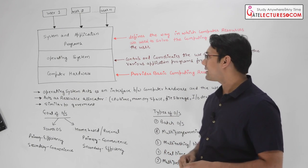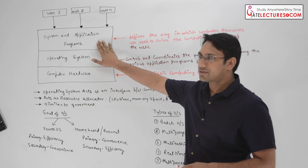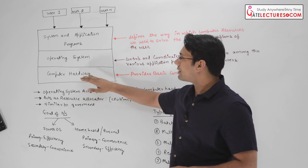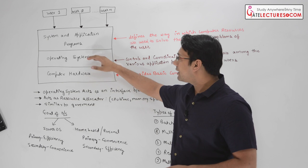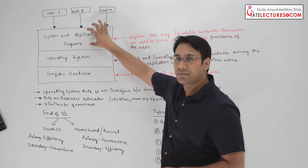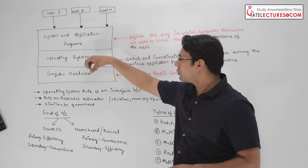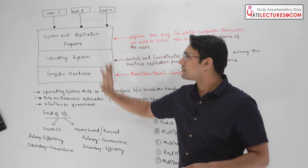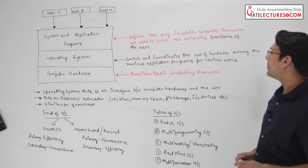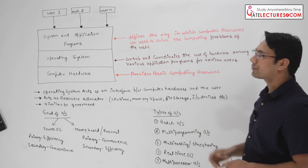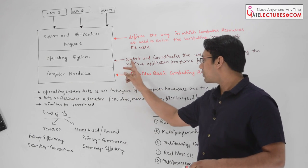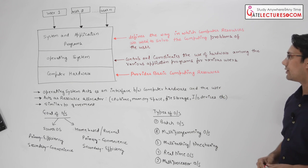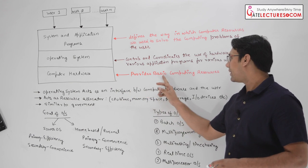An operating system acts as an interface between the computer hardware and the software. As you can see in this diagram, I have drawn the computer hardware, then the operating system resides over the computer hardware and provides an interface to the application programs, so that application programs can use the computer hardware efficiently. This operating system controls and coordinates the use of hardware among the various application programs for various users, and the computer hardware provides the basic computing resources.